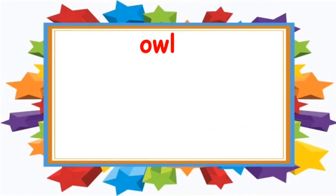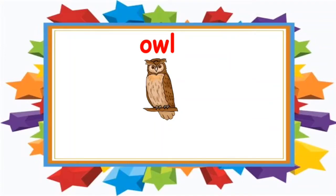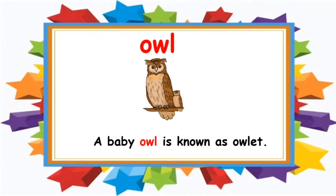The next word is 'owl.' Children, look at the word and please repeat — the word is owl. Owl is a kind of bird which sleeps during daytime and during night it remains awake. I have used the word owl in a sentence: A baby owl is known as an owlet. Can you see an owlet next to the owl?